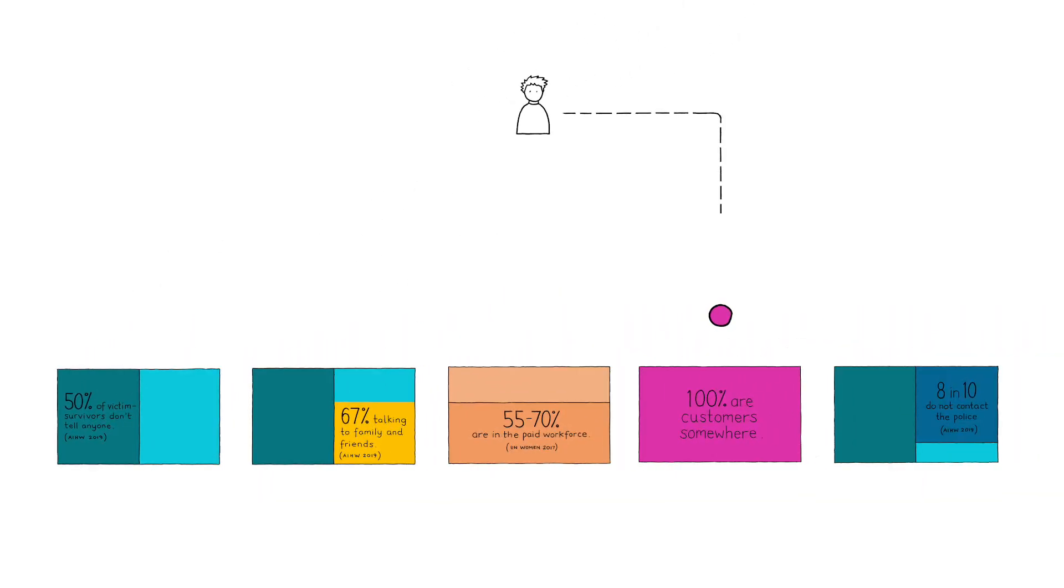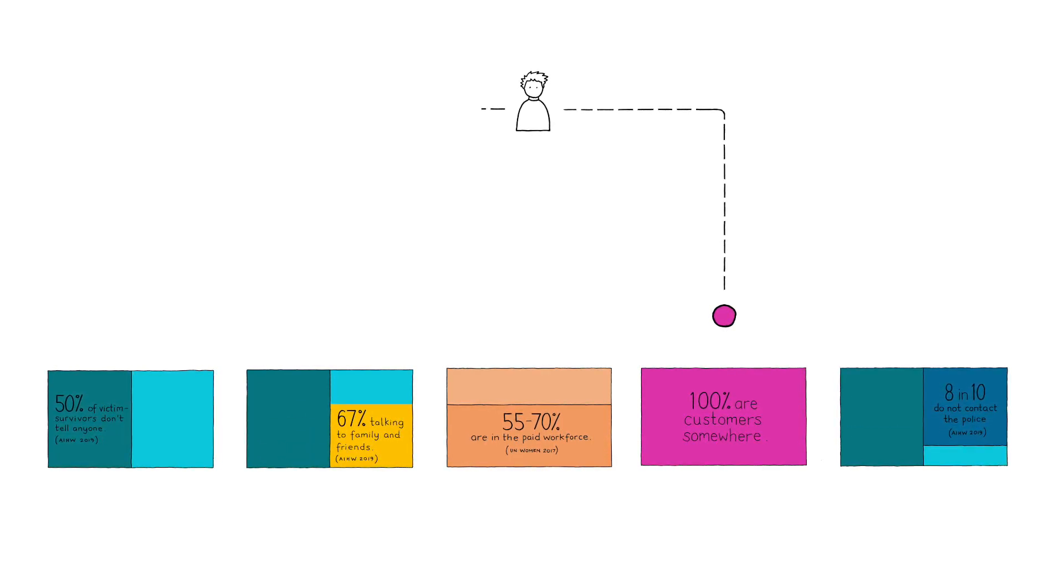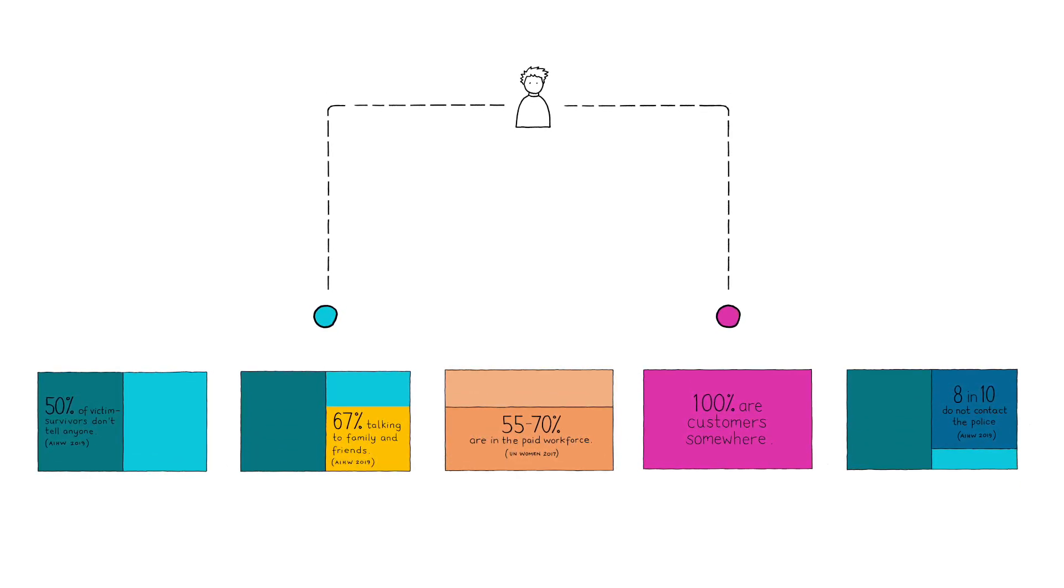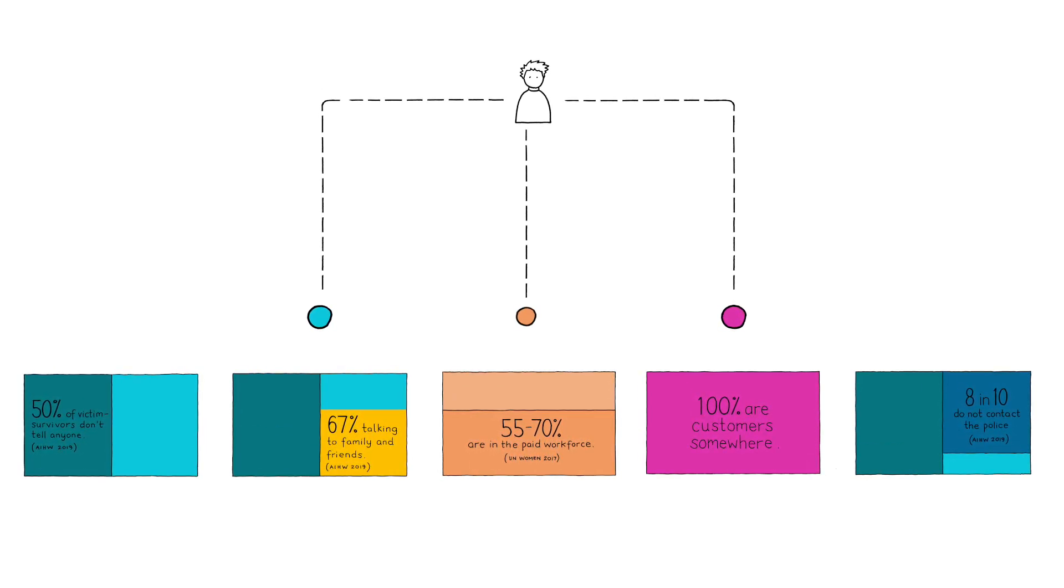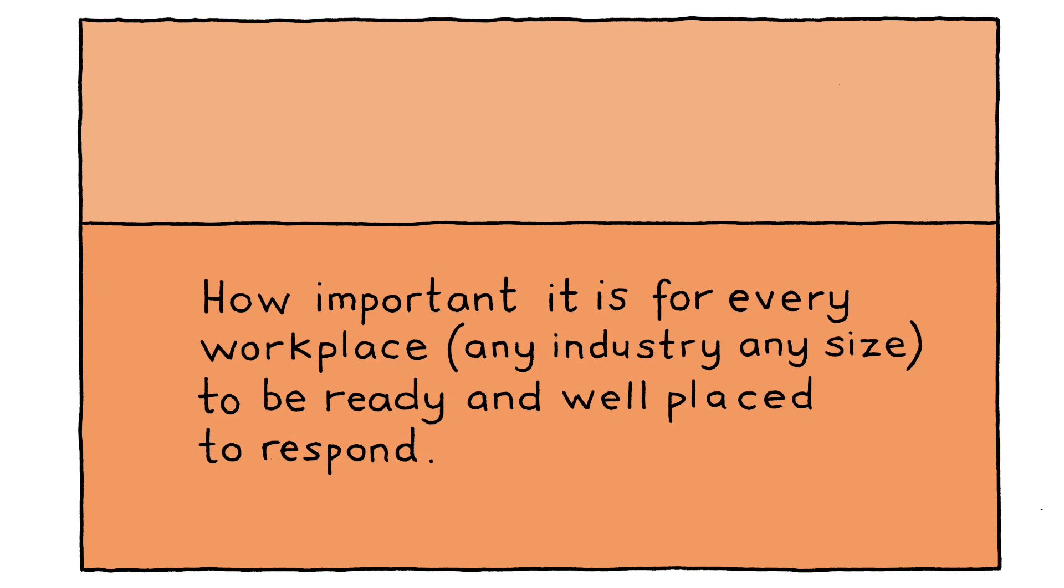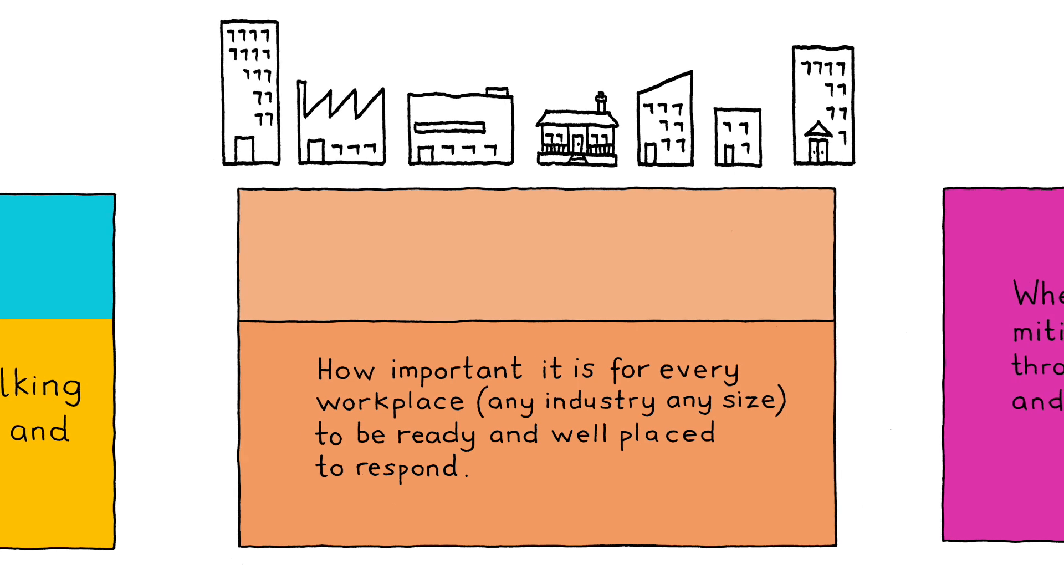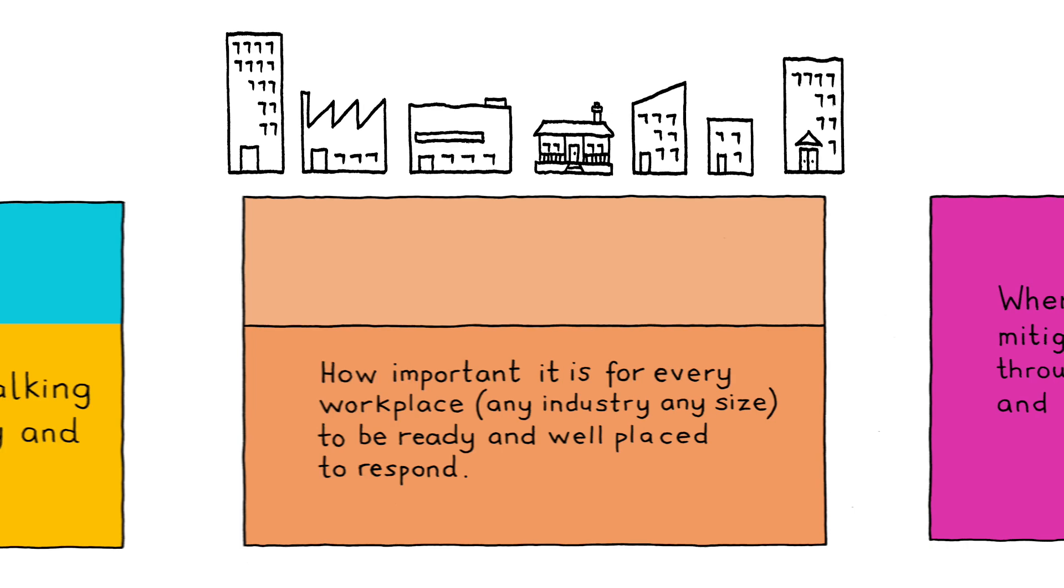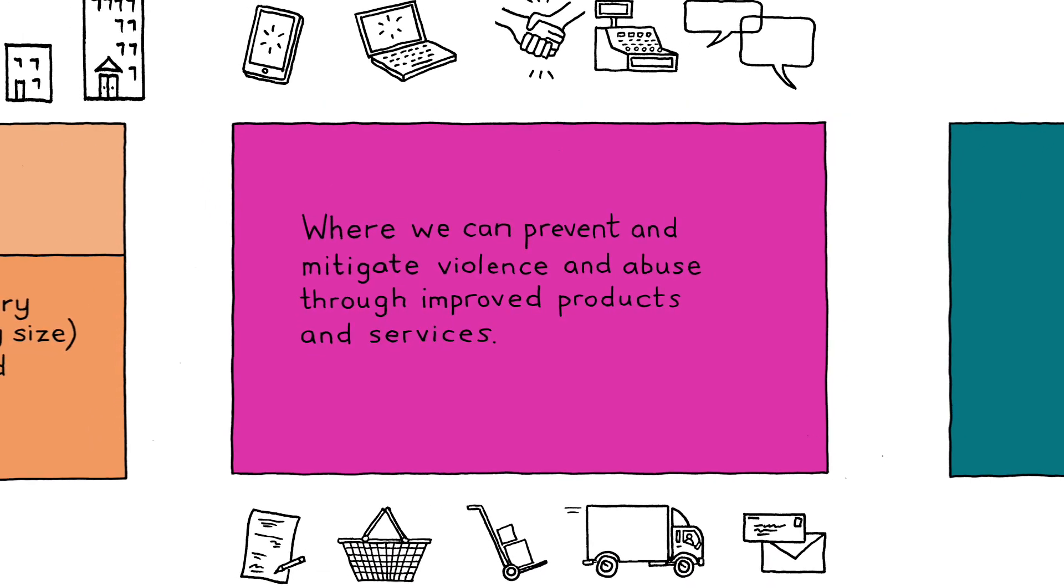Anthony is a customer and client of several businesses and organizations and trying to access products and services that build on his safety. He hasn't told any family or friends about his partner's violence and how he's decided to stay living with him, as this is his safest option. He's thinking about talking to a colleague at work. How important is it for every workplace to be ready to respond, in any industry and of any size? What might the experience be like for the responding colleague if they're underprepared to respond to people in Anthony's situation? And where can we prevent and mitigate violence and abuse through improved products and services?